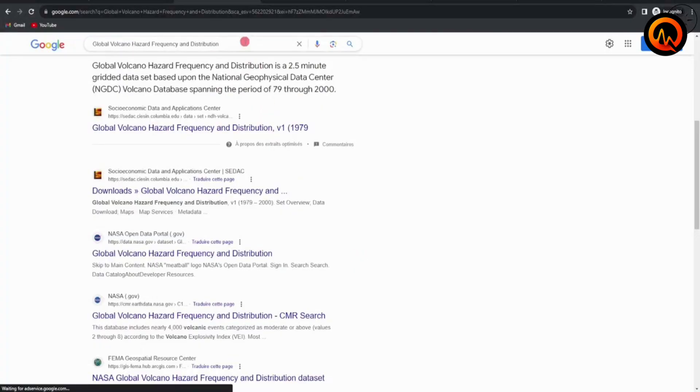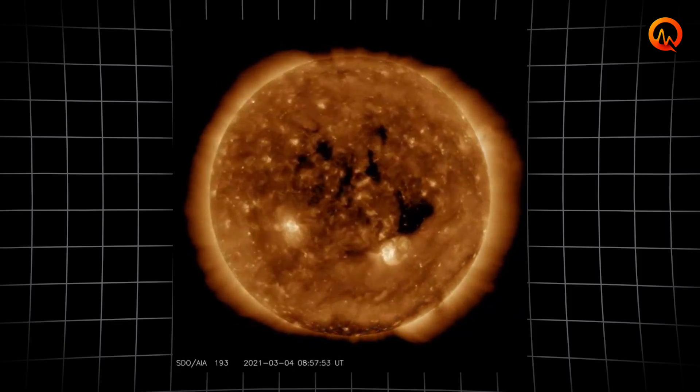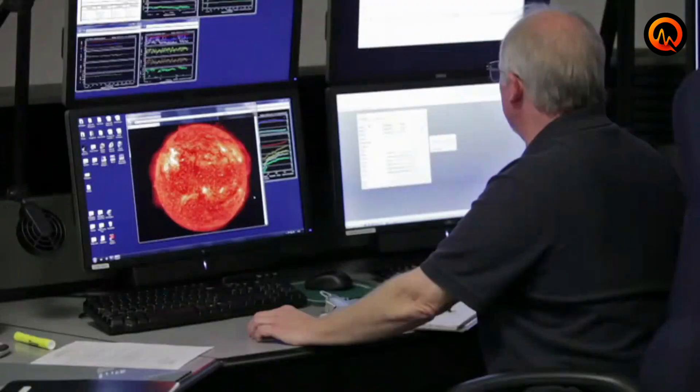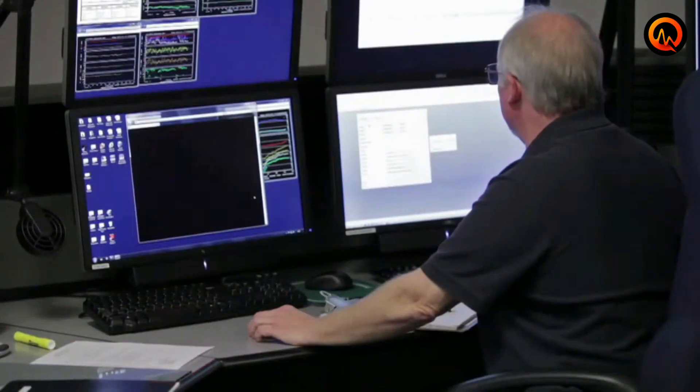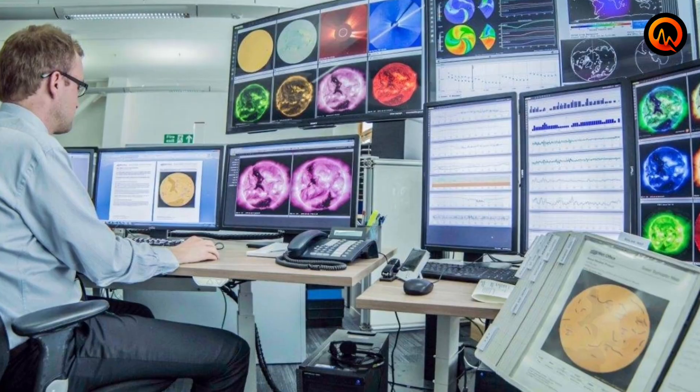Stay informed through official channels that now coordinate between multiple agencies. The Global Volcanism Program shares data with space weather monitoring systems. NASA's Solar Dynamics Observatory provides early warning of solar flare activity that volcanic observatories use for enhanced monitoring protocols. The Smithsonian's Volcano Hazards Program maintains real-time databases that cross-reference solar activity with volcanic unrest patterns.